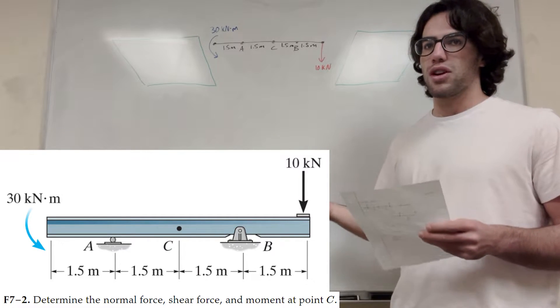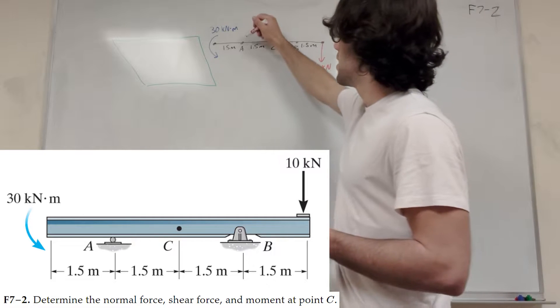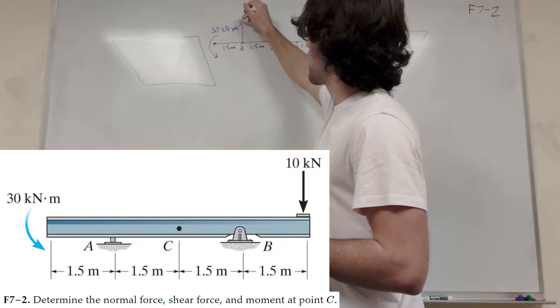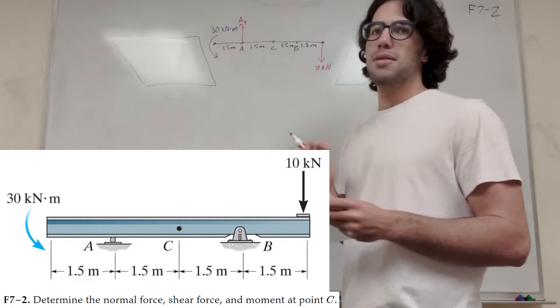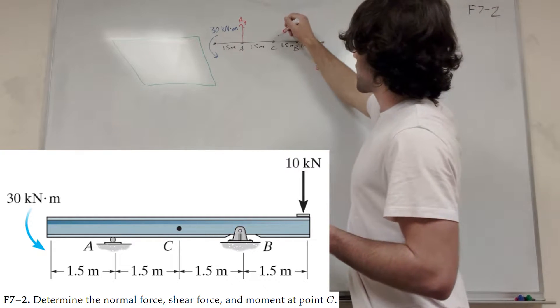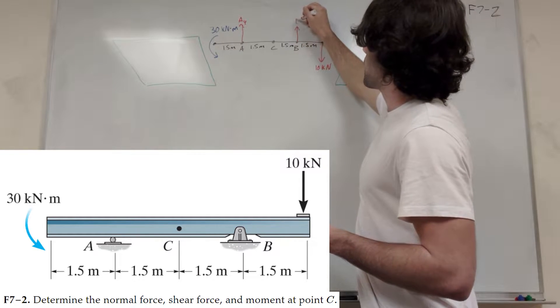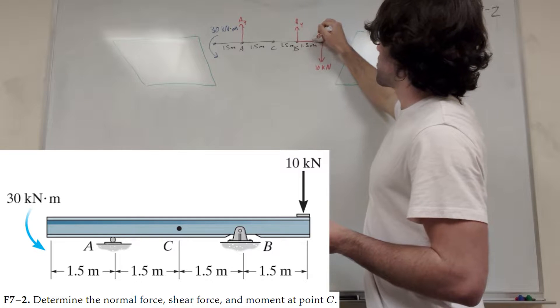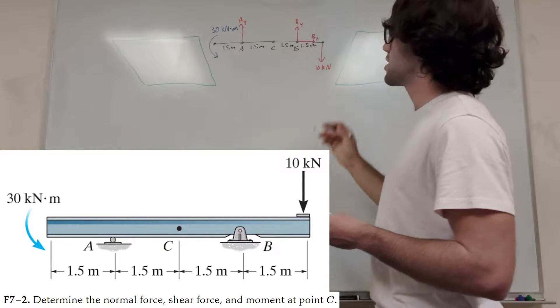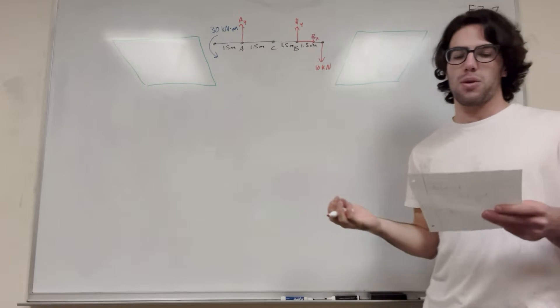So at A, it's a roller. A is a roller, so that means A is going to be just going straight up. So this is A_Y, we can label that. But B is a pin. So B is going to be going up. We're going to say B_Y. And then we can say that B_X is pointing one of the X directions. So you can just pick a direction, and it'll work out fine.